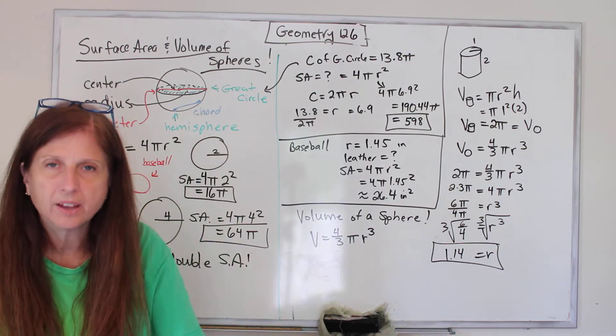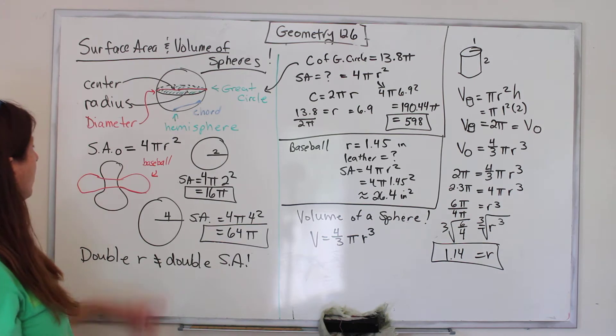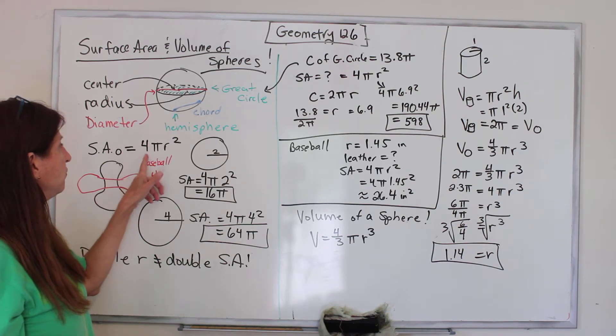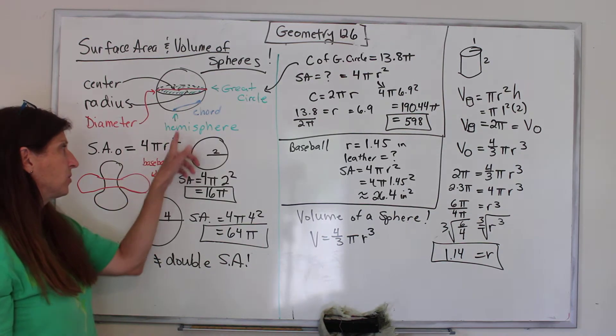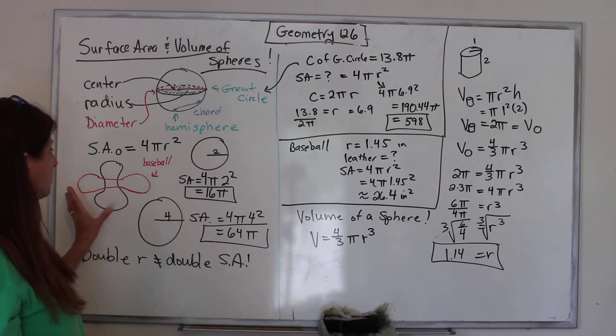So you might have learned this already somewhere along the way, and if not, today's a good day. The formula for surface area of a sphere is 4πr², and we can sort of see where that comes from.